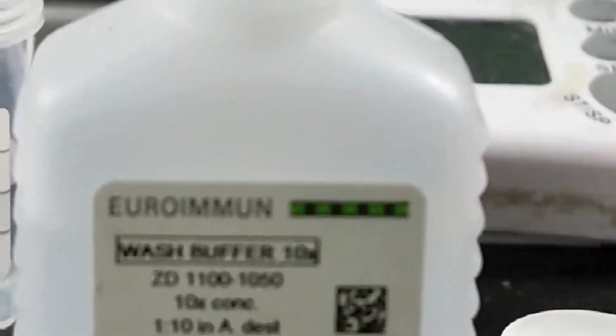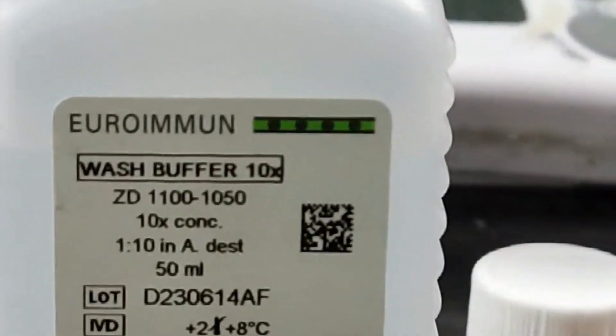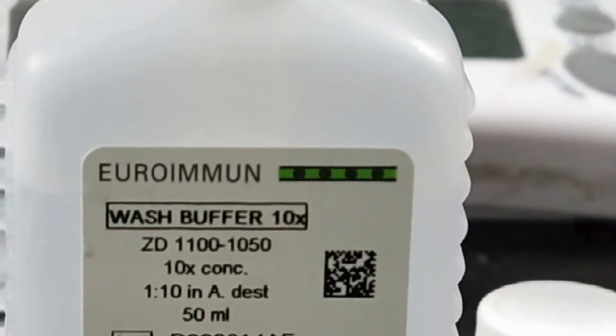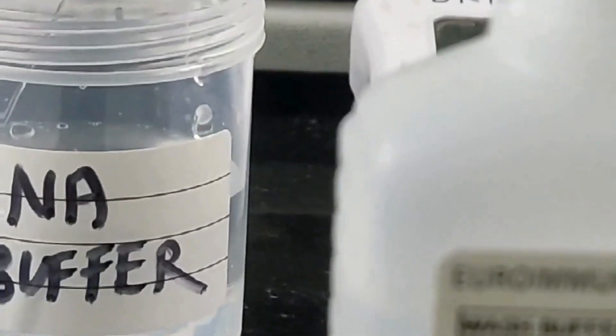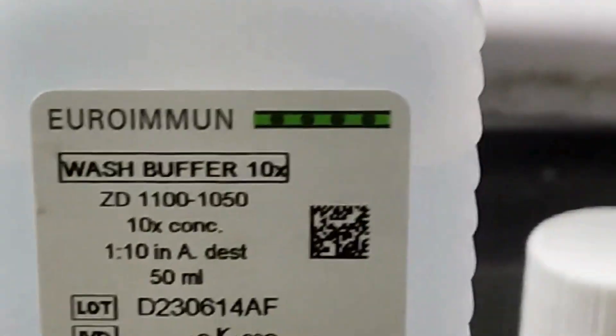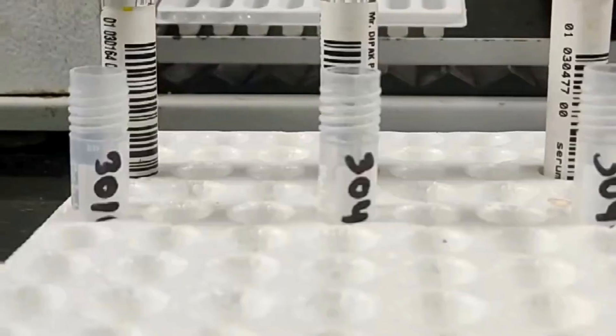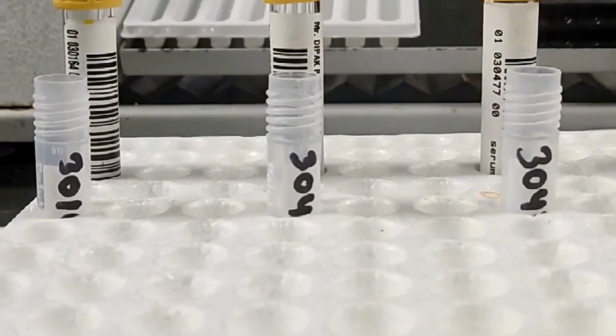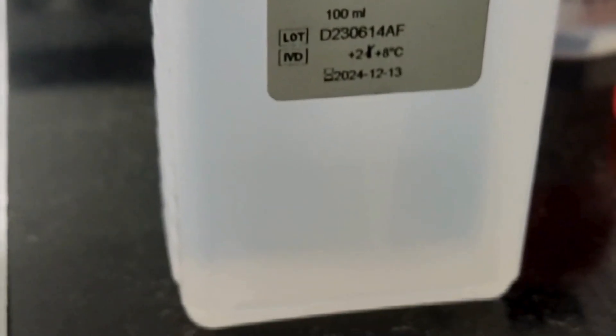And then we come to our sample diluting step. We dilute the sample in one is to 101 dilution by pipetting 15 microliter of serum sample into 1500 microliter of sample buffer. Here we use sample buffer for dilution.